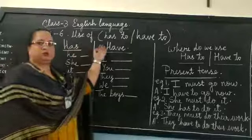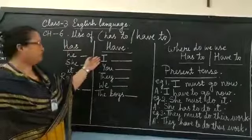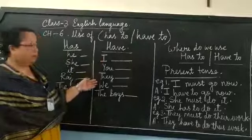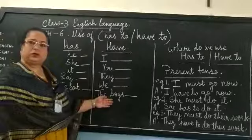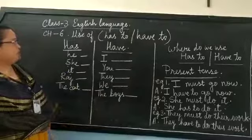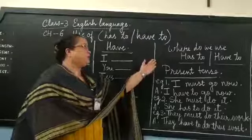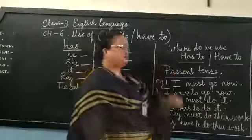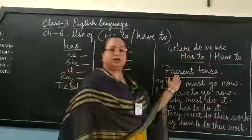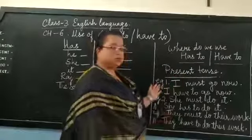So where do we use have? We use have when a sentence begins with I, you, they, we, the boys, or any other kind of plural subject. Has to and have to are used in the present form. So let us look at the examples over here.